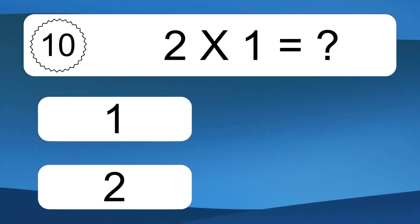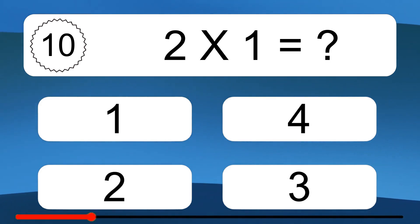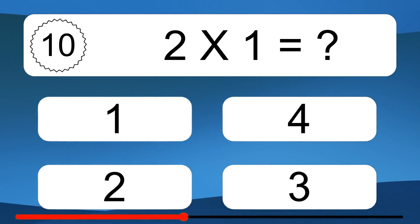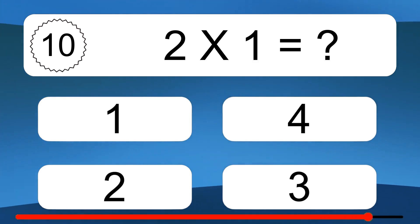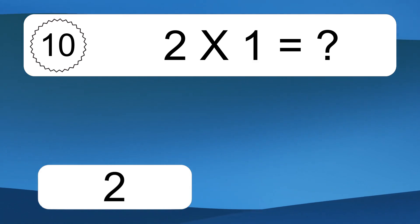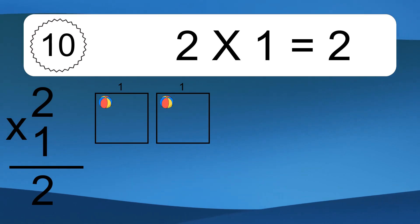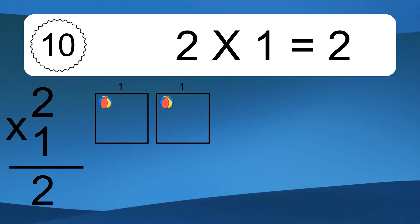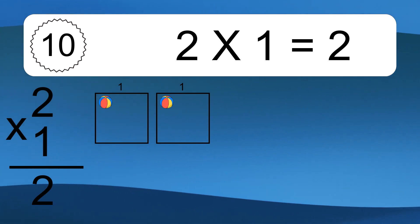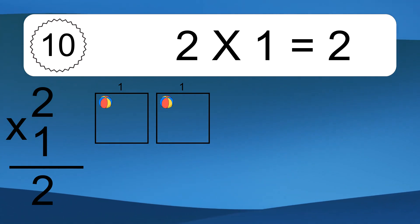2 times 1 equals what? 2 times 1 equals 2. We have 2 boxes, and each box has 1 colorful ball inside. If you count all the balls in all the boxes together, you will have 2 times 1 balls. This equals 2 balls.